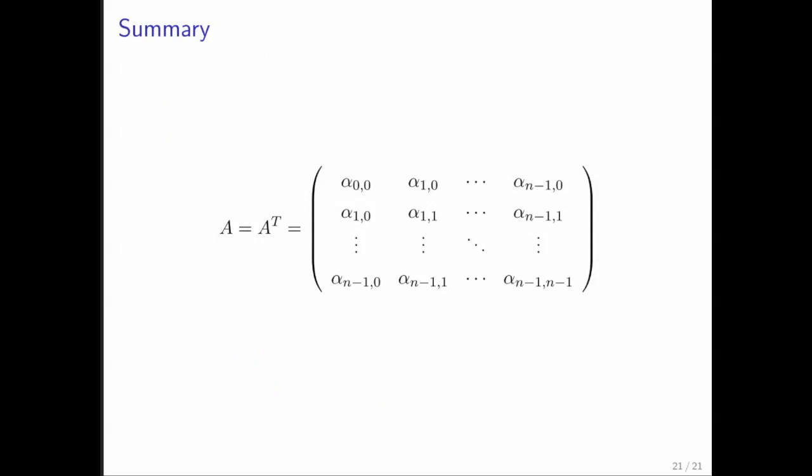So in summary, a matrix A is equal to its transpose means that it's a symmetric matrix. And a matrix is symmetric if corresponding entries above the diagonal are equal to the mirrored entries below the diagonal, is how I think about it.